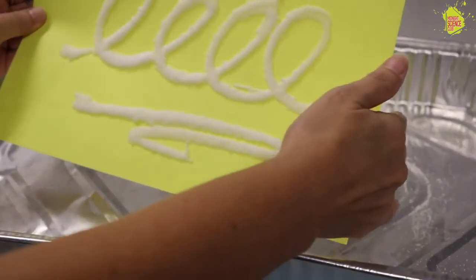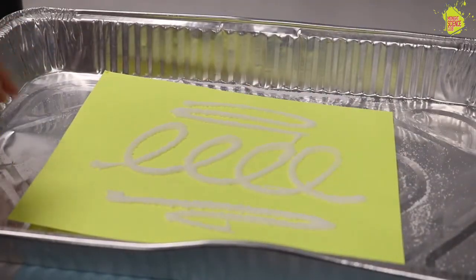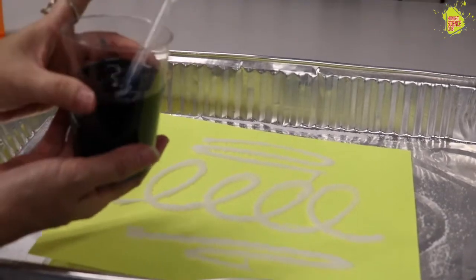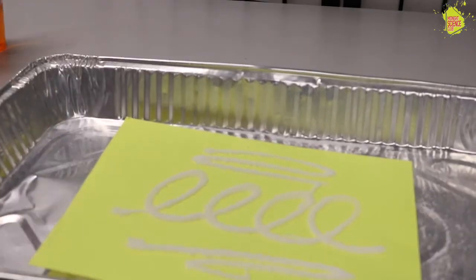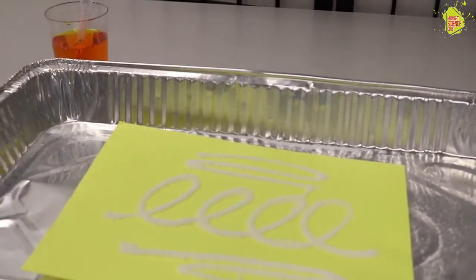Once you're done and you think all the salt is there and the excess is taken off, now we can go ahead and color it. So I made two colors here. I made blue—this is just food coloring with water—and I made yellow. You can definitely just use one, but I decided to use two colors.